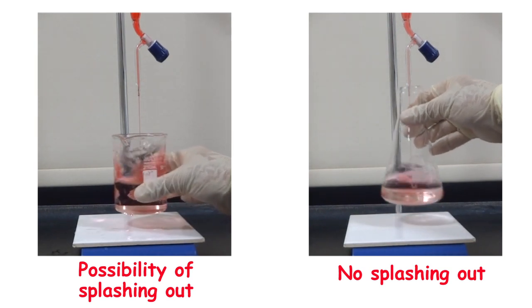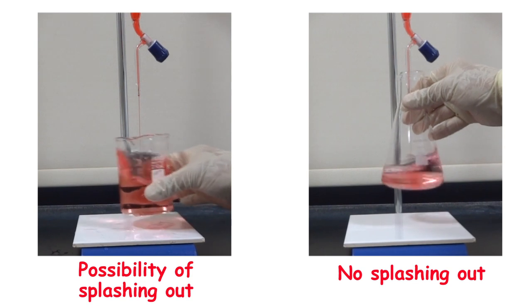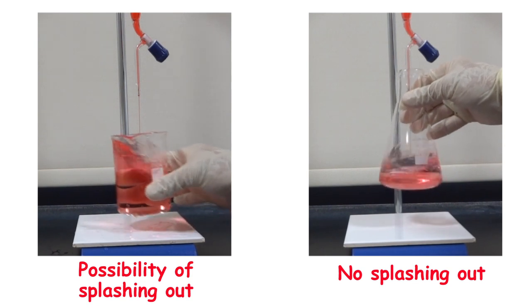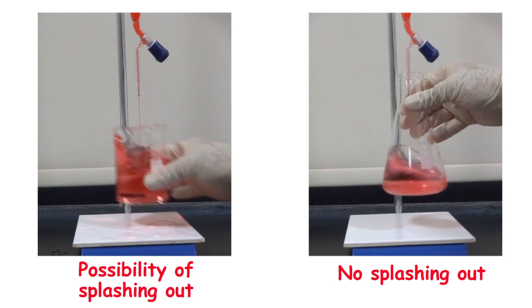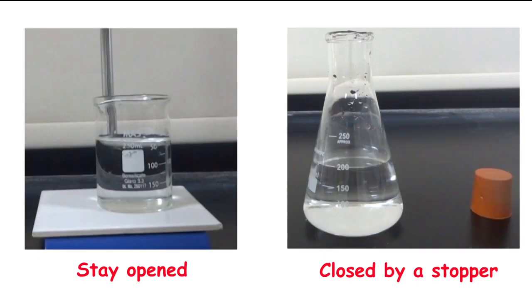When we are mixing in a beaker, there is a possibility of splashing out, while there is no splashing out when mixing in a conical flask. The beaker will stay opened, while the conical flask can be closed by using a stopper.